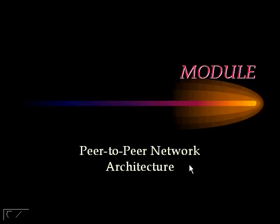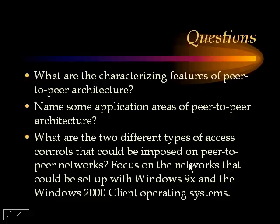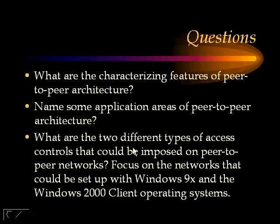The peer-to-peer network architecture will be explored in this module. We will seek the answers to the following questions. First, what are the characterizing features of a peer-to-peer network architecture? Name some of the application areas of the peer-to-peer architecture. And finally, what are the two different types of access controls that could be imposed on peer-to-peer networks?